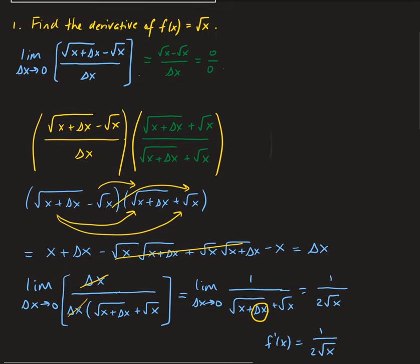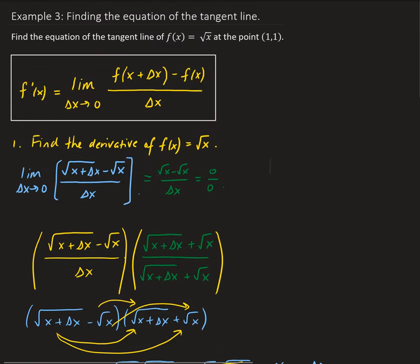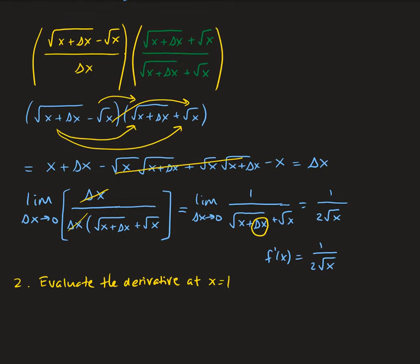Now we can use this to find our slope. We evaluate the derivative function at our point where x equals one. So f prime of one gives us the slope of the tangent line. That's going to give us one half. So one half is our slope.